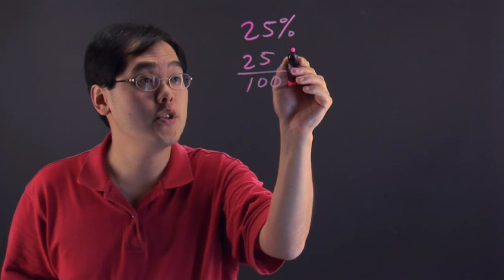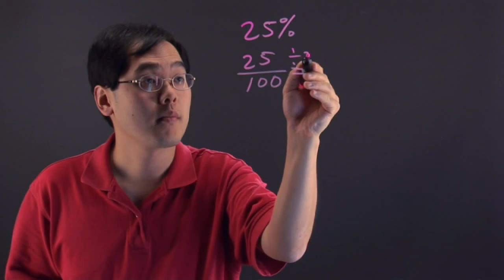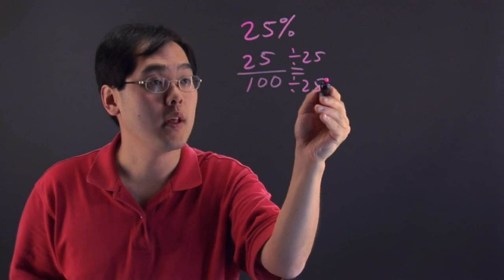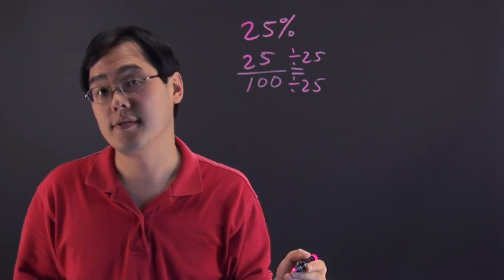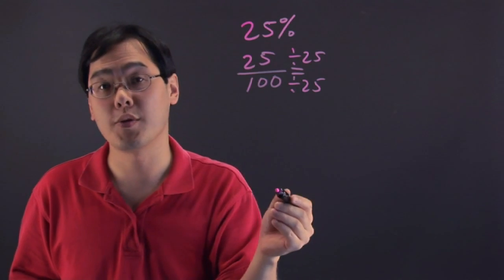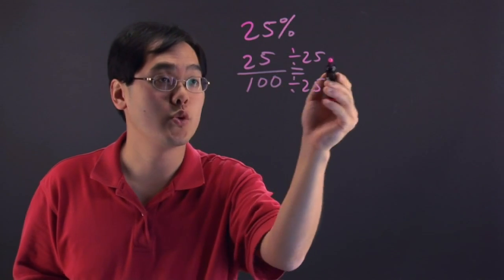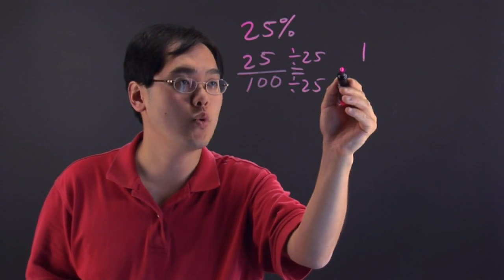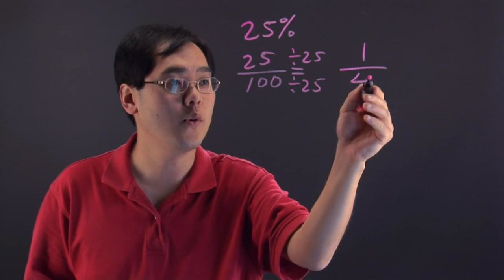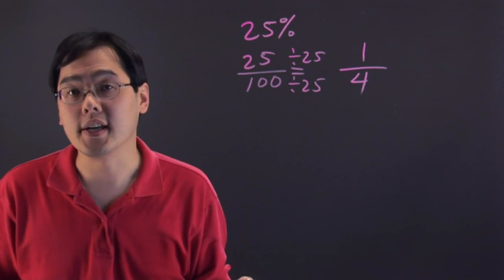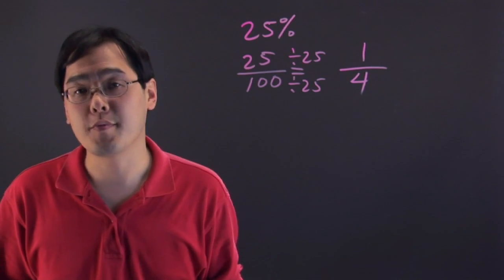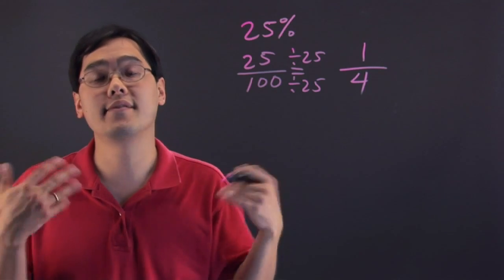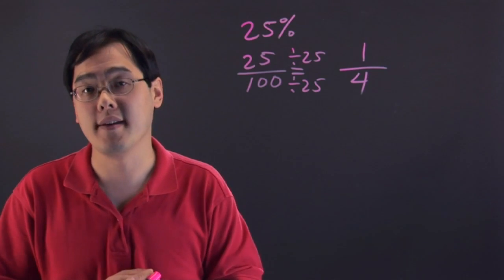In fact, you can reduce both the top and bottom by 25, because 25 goes into both numbers. So 25 divided by 25 is 1, and 100 divided by 25 is 4. So in actuality, to calculate 25% off, you can either multiply by a quarter or divide by 4.